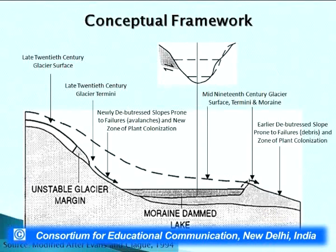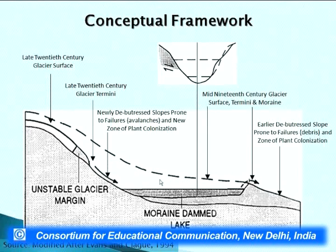This is basically my conceptual framework. As you can see in this slide, this is the glacier surface in the 19th century when glaciers had maximum extent. But in the last 150 to 200 years, these glaciers have retreated to their current state. There has been glacial retreat, area vacation, and also changes in the depth of the glacier. When glaciers retreat, they leave debris called terminal moraine, and when glaciers retreat further, rivers get blocked by the terminal moraine.